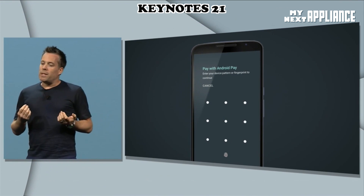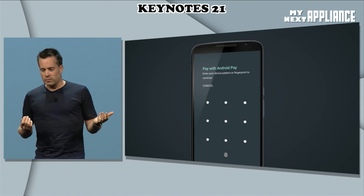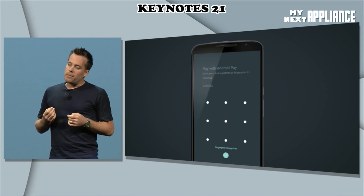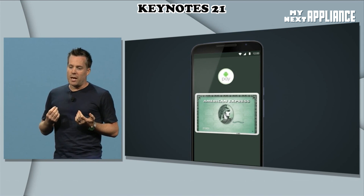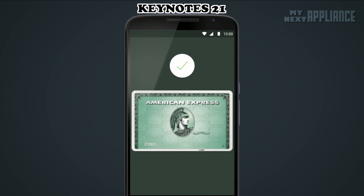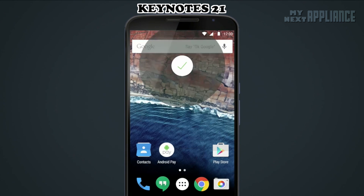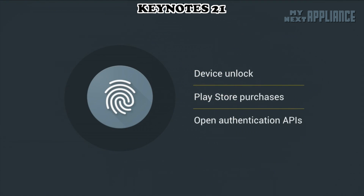The user simply touches the fingerprint sensor, which unlocks the phone. The phone will then make a secure NFC exchange with the payment terminal. The payment goes through, and you get the Android Pay notification of the transaction at the top. With the M release, you can also use your fingerprint to simply unlock your device or make Play Store purchases.